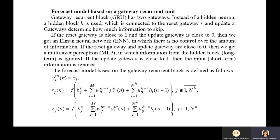Forecast model based on the gateway recurrent unit. The gateway recurrent unit has two gateways. Instead of hidden neurons, a hidden block H is used, which is connected to the reset gateway and update gateway. The gateways determine how much information to skip.